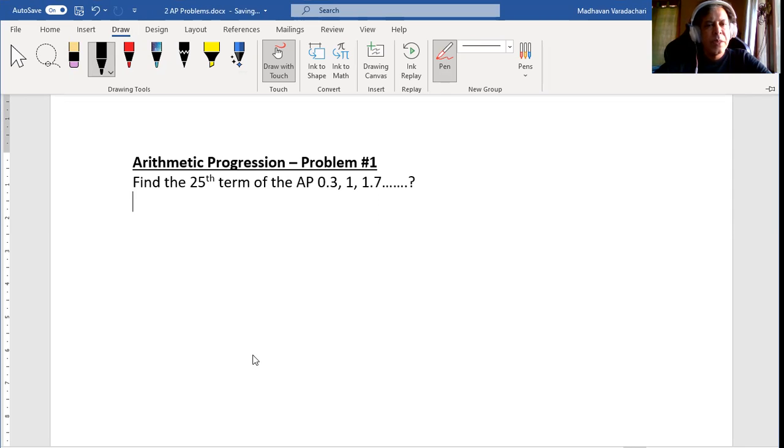Problem number one: Find the 25th term of the arithmetic progression 0.3, 1, and 1.7.